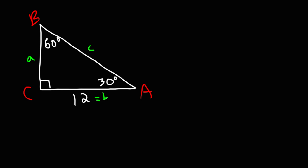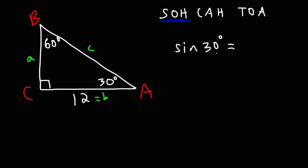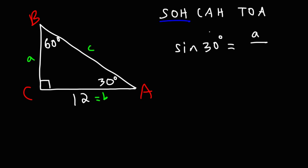To calculate A and C we need to use trigonometry. You may be familiar with SOH-CAH-TOA. The SOH part tells us that sine of an angle — say sine of 30 — equals the opposite side divided by the hypotenuse. Opposite to 30 is A, and the hypotenuse is always across the right angle, which is C in this case.